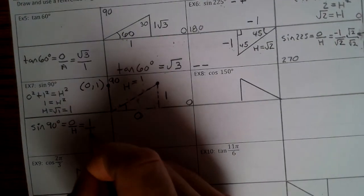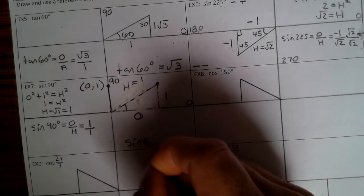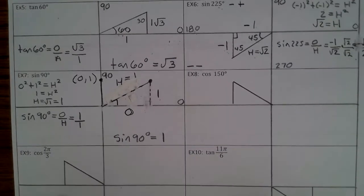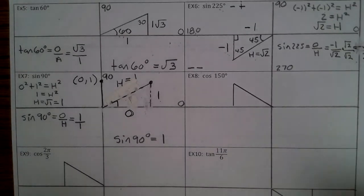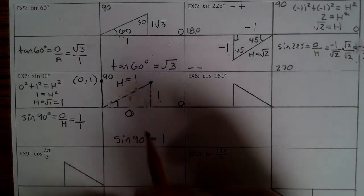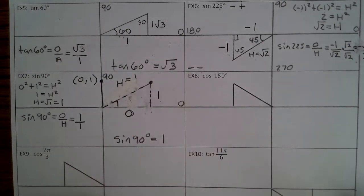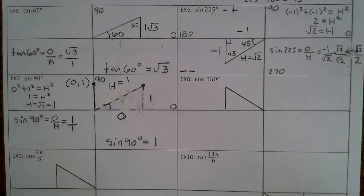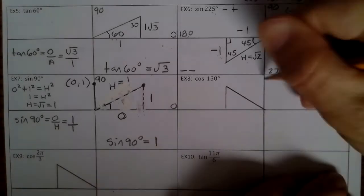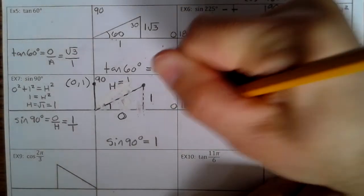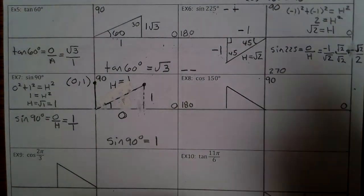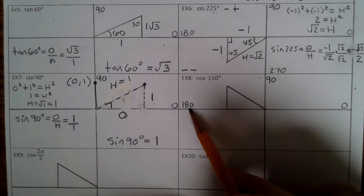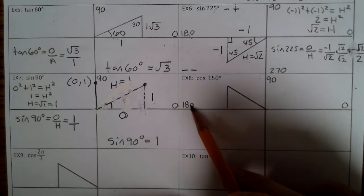That's probably my least favorite example because it's just so weird pulling the triangle out that way. Example 8: cosine of 150 degrees. We know 150 lies between 90 and 180. What do you subtract from 180 to give 150? 180 minus 150 equals 30. So the reference angle is 30 degrees.